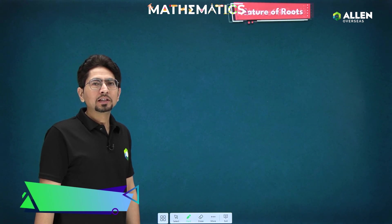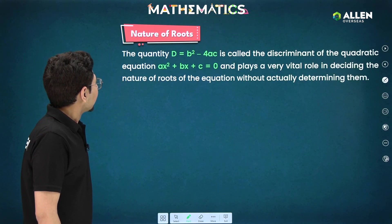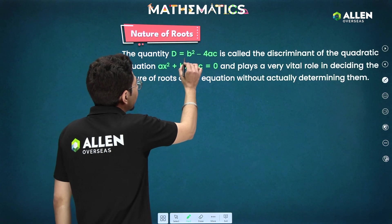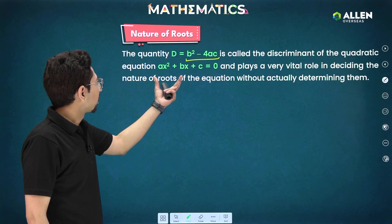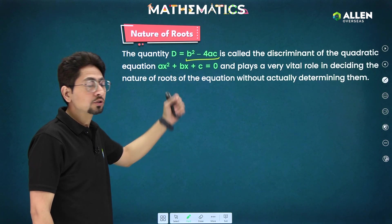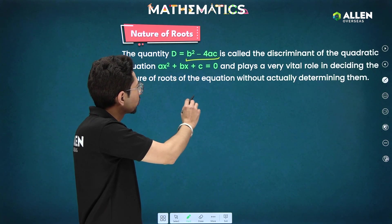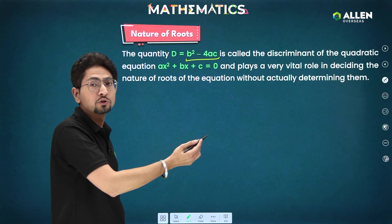Now very simply if we observe the quantity discriminant, this is defined as discriminant D = b² - 4ac for any general quadratic equation. And it also plays a very vital role in deciding the nature of roots of the equation without actually determining them.